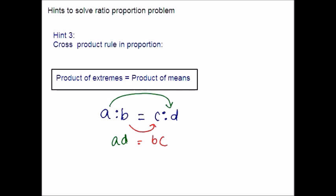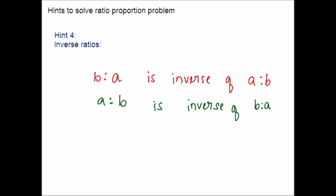Let us move on to Hint 4. You might be familiar with inverse ratios. Inverse ratios: for example, B is to A is the inverse ratio of A is to B, and vice versa — A is to B is the inverse ratio of B is to A. You can refer to one of my previous videos on types of ratios to learn more. That is, A is to B and B is to A are the two ratios inverse to each other.